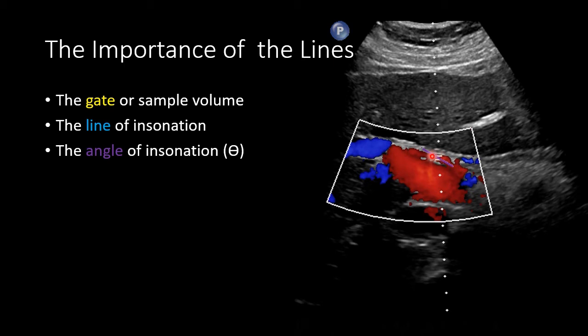So if we think that blood is flowing in a certain direction within the gate, we adjust the line to reflect that expected direction of flow. Once we have adjusted for the expected direction of flow, we calculate the angle of inclination as the angle between that direction of flow and the angle our ultrasound waves are traveling in. We can then take the cosine of that angle to accurately calculate the velocity of flow within our gate.